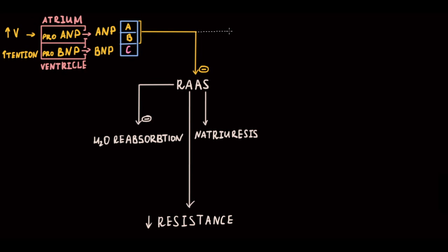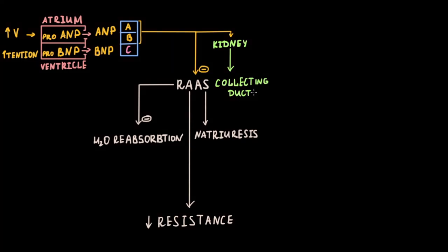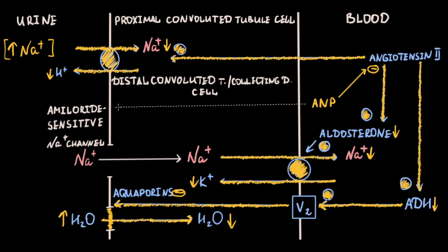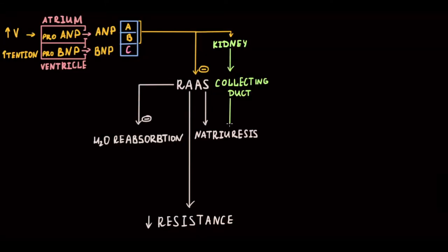In the kidney, ANP also blocks the amiloride-sensitive sodium channel, which decreases sodium entry into the renal epithelium and increases sodium concentration in the urine. Additionally, natriuretic peptides act in the renal glomerulus, where they increase glomerular filtration rate (GFR).